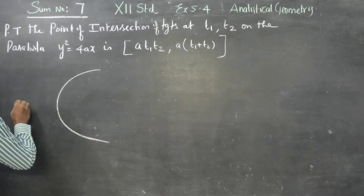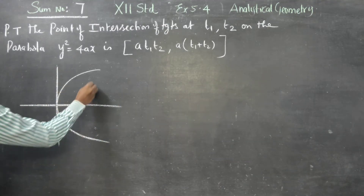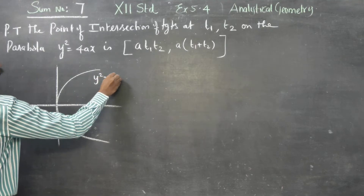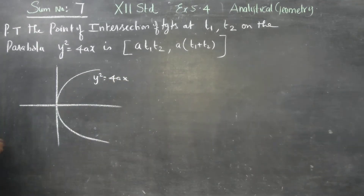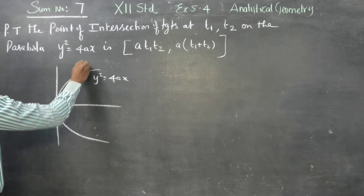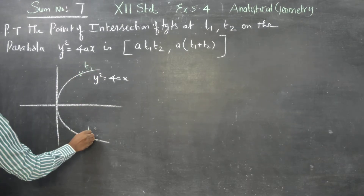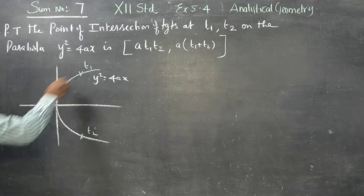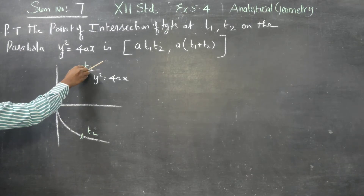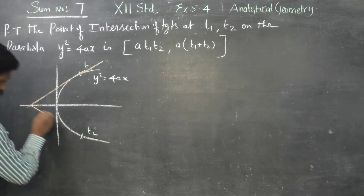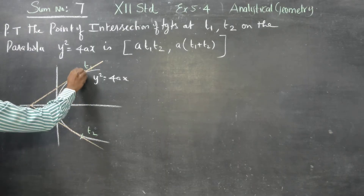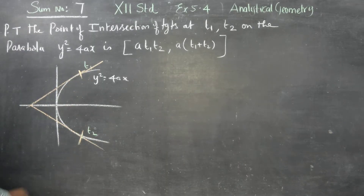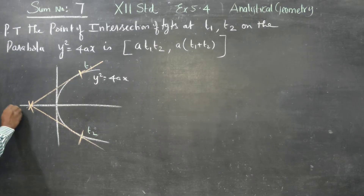Let this parabola be y² = 4ax. Consider two points T1 and T2 — these T points are called parametric forms, where T is a parameter. I am going to draw two tangents at T1 and T2. They cut at a point — let this point be T. I want to find this point.